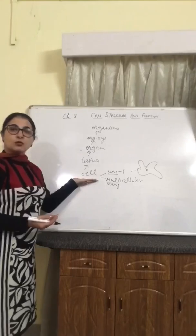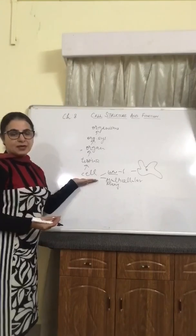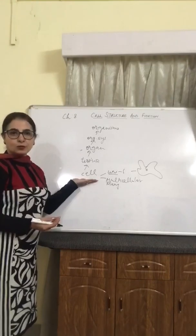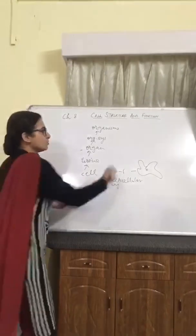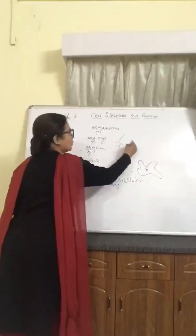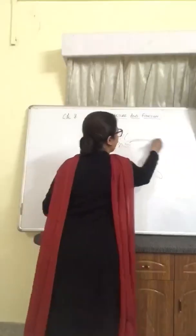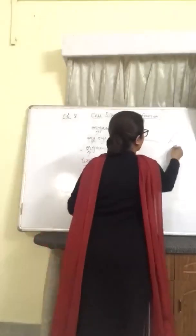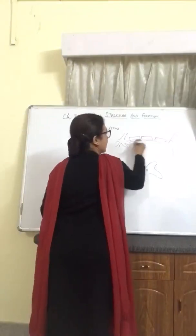Cells also vary in their shape, which depends upon where they are located and what function they are performing. For example, in the case of a nerve cell, also known as a neuron, the shape is branched, because it has to carry messages.